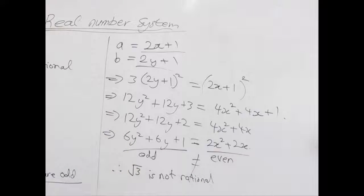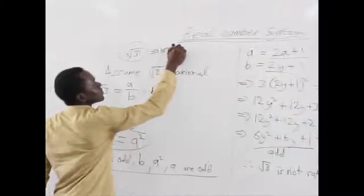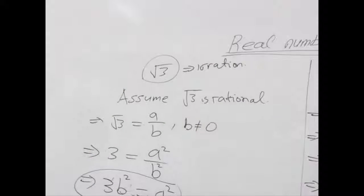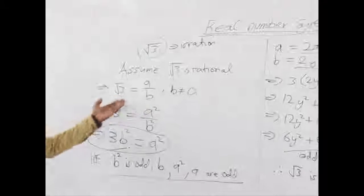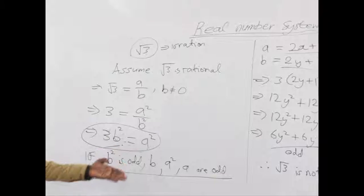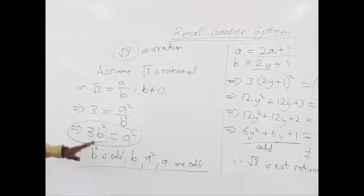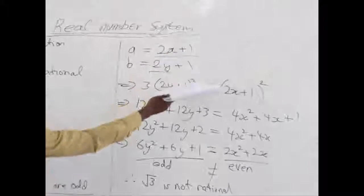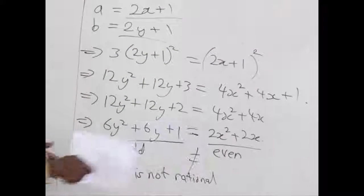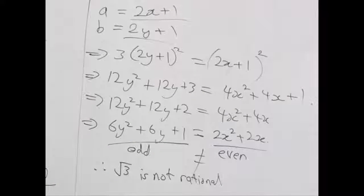If root 3 is not rational, then it means it is an irrational number. We squared both sides, made it a linear equation, tested whether the values were odd or even, substituted 2x plus 1 for A and 2y plus 1 for B, and found we could not satisfy the equation. So we have proved that root 3 is indeed an irrational number.